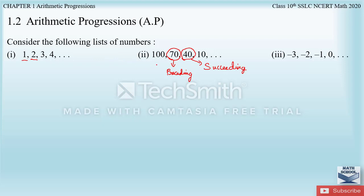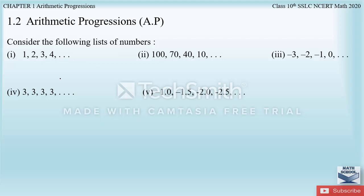Consider the following lists of numbers. Each number in the list is called a term. We can observe the lists of numbers and determine the pattern or rule in which these numbers or series are written down.